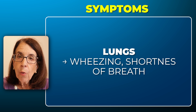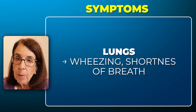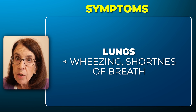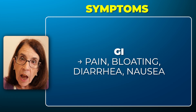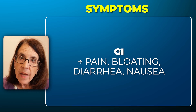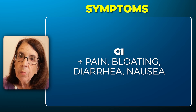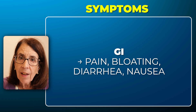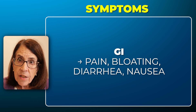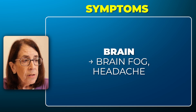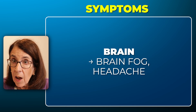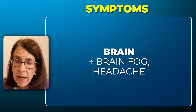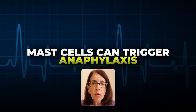In the lungs, people may report difficulty breathing, wheezing, and shortness of breath. In the GI tract, if the mast cells activate, we see abdominal pain, gas, bloating, diarrhea, and sometimes nausea. And in the brain, we see brain fog and people may complain of headache.